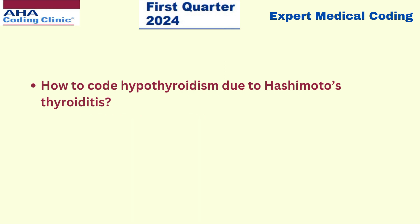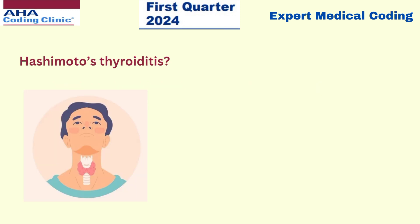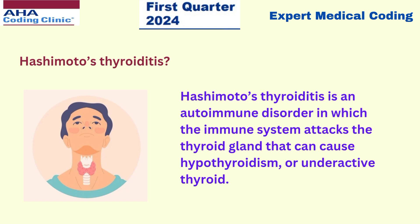How to code hypothyroidism due to Hashimoto's thyroiditis? Let us first see what Hashimoto's thyroiditis is. Hashimoto's thyroiditis is an autoimmune disorder in which the immune system attacks the thyroid gland, which can cause hypothyroidism or underactive thyroid.